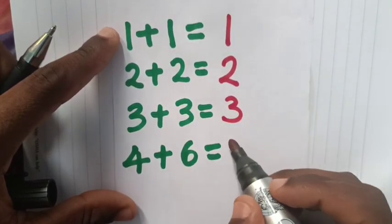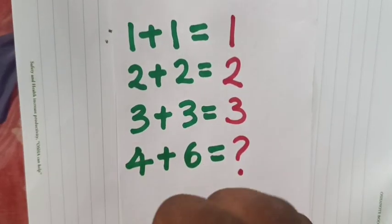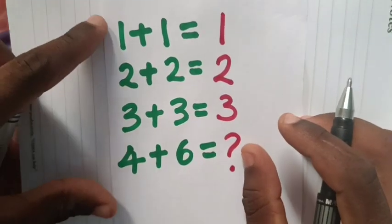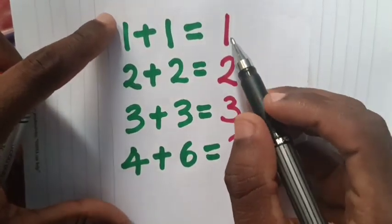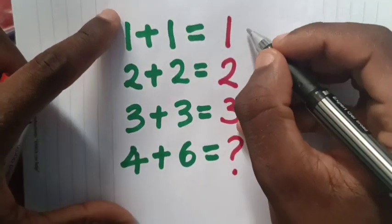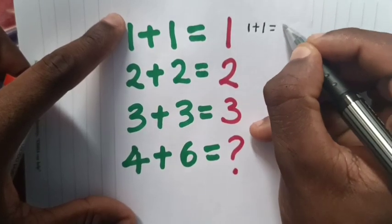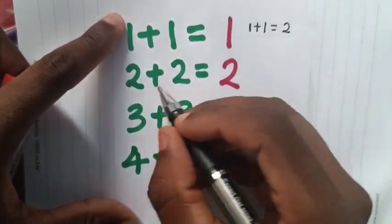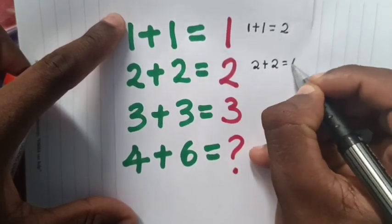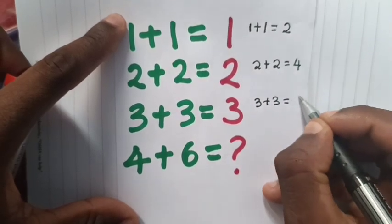4 plus 6 equals what? From normal calculation, we know that 1 plus 1 equals 2, but here in our puzzle, 1 plus 1 equals 1. 2 plus 2 equals 4 from normal calculation, and 3 plus 3 equals 6 in normal calculation.